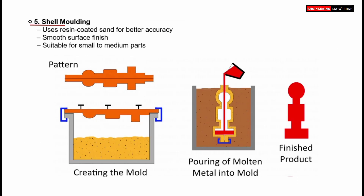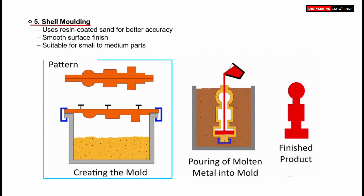Let's now take a look at shell molding, an advanced casting process known for its precision and surface finish. This method uses resin-coated sand to create the mold. The resin improves the dimensional accuracy and results in a smooth surface finish. Shell molding is particularly suitable for small to medium-sized components. In the first stage, a heated pattern is brought into contact with resin-coated sand. The heat causes a thin shell of sand to harden around the pattern, forming a rigid mold shell.